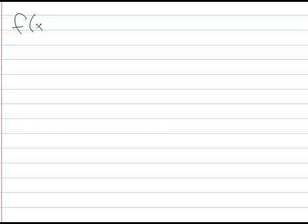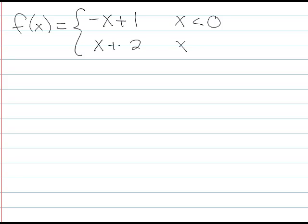I wanted to take a second to clarify what we talked about at the end of last week — these piecewise function things. Let's do an example. Let's call it f, and it's going to be equal to one of two things: negative x plus one when x is strictly less than zero, and x plus two whenever x is greater than or equal to zero.